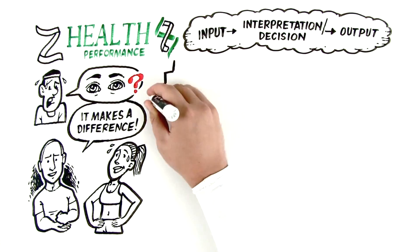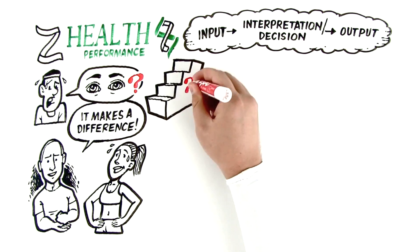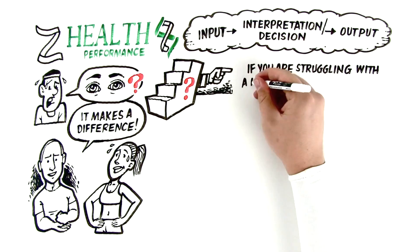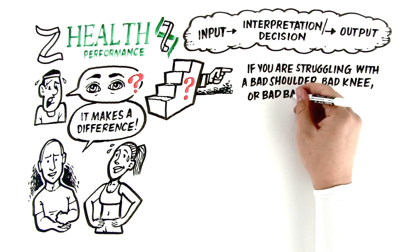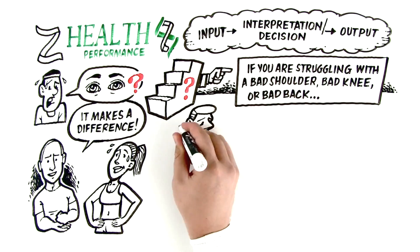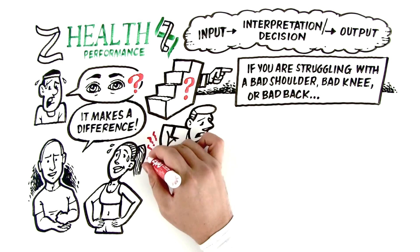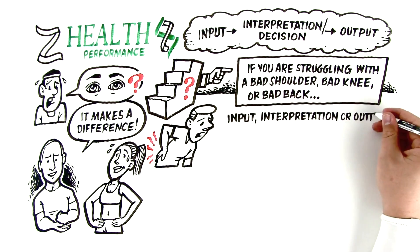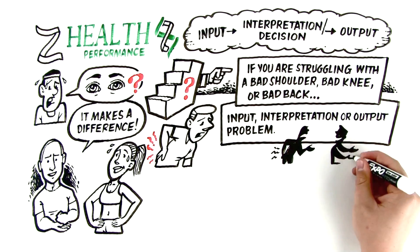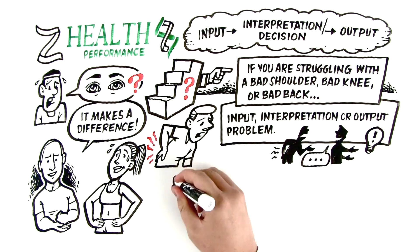So what does this really mean for you? It's very important to me that you hear this part. Number one, if you have stuff that you've been struggling with, meaning you've got a bad shoulder, bad knee, bad back, I guarantee you this is the answer somewhere. You've got an input problem, an interpretation problem, or an output problem. You need to be working with people that understand this and can help you delineate or figure out what that problem is.